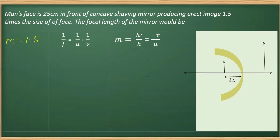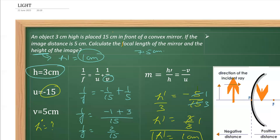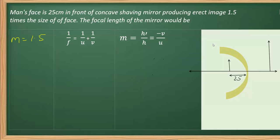We can write object distance: the object is placed on the left-hand side of the mirror and is denoted by the symbol U. Since the object is placed to the left-hand side of the mirror, it is negative 25 centimeters.